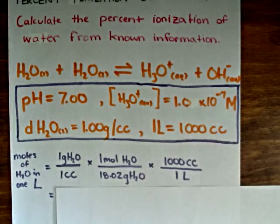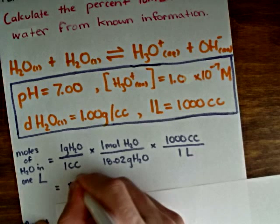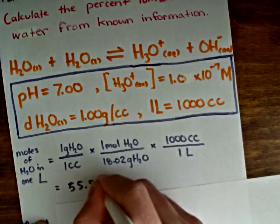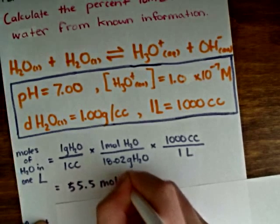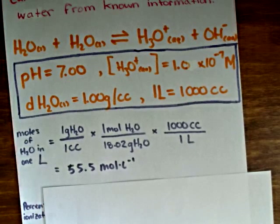Once we do that, we'll end up with a value of 55.5 moles per liter. So in 1 liter, there are 55.5 moles of water.